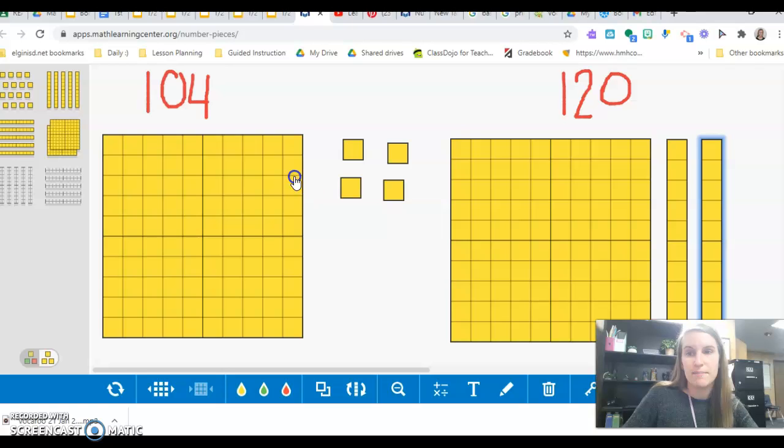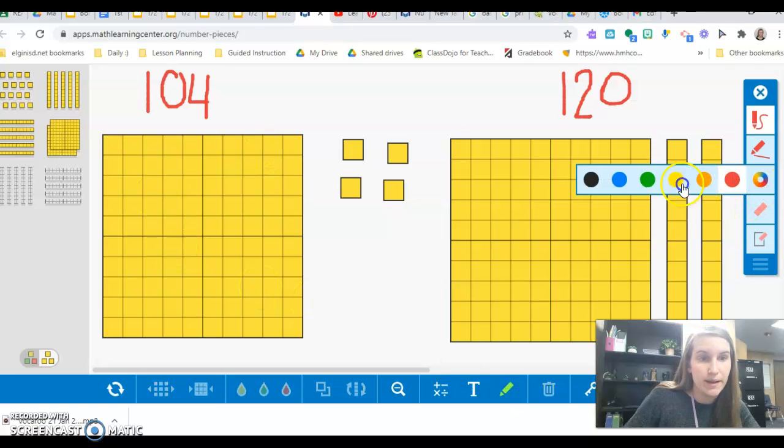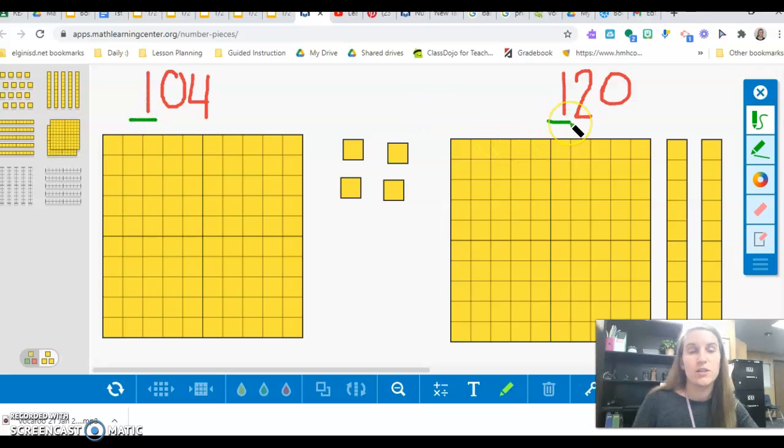So when I'm comparing these numbers, well, first I can look at my hundreds place. 104 has one in the hundreds place. 120 has one in the hundreds place. Hmm. I can't tell. I need to go to the next digit. So now I'm going to go to my tens place. 104 has zero tens. 120 has two tens. Hmm. Which has more tens? Zero tens or two tens? Two tens, right? That's 20. So that means that the number 120 is greater than 104.